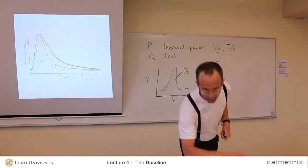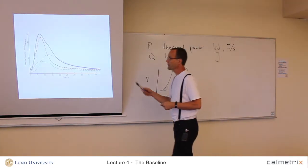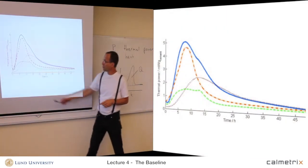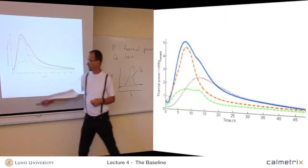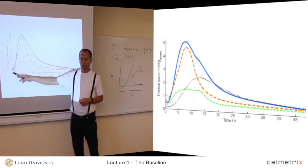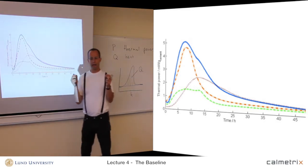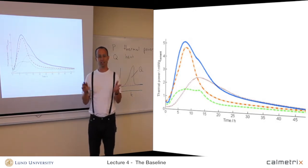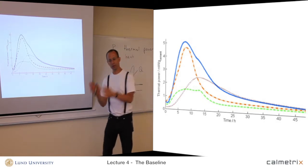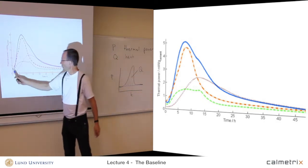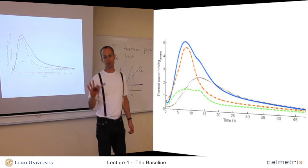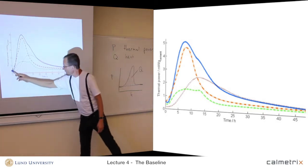If we instead look at the cement hydration we examined earlier, there is no baseline to be found at the start or at the end. There is no baseline at the beginning because from the moment we add water to cement, the reaction starts and heat is produced. We do that mixing outside the calorimeter and then transfer the sample in, so when we start measuring, the reaction is already going and heat is already being produced.